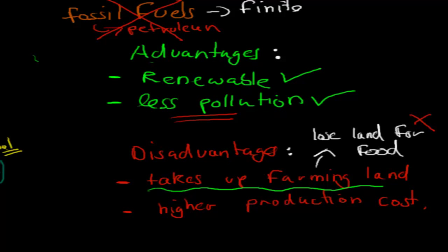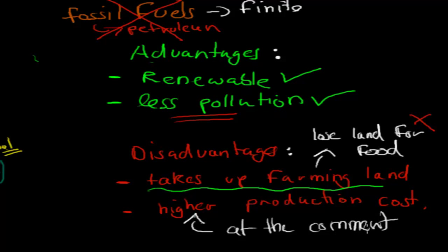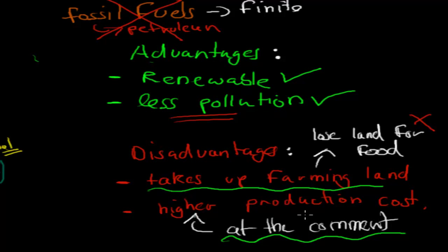The other disadvantage is that, at the moment, it costs more. Most of our petrochemicals come from petroleum and fossil fuels because they are significantly cheaper. However, in the future, the price of biomass-based production will probably come down, while fossil fuel-based petrochemicals may become more expensive, making cellulose-based chemicals more economically viable.